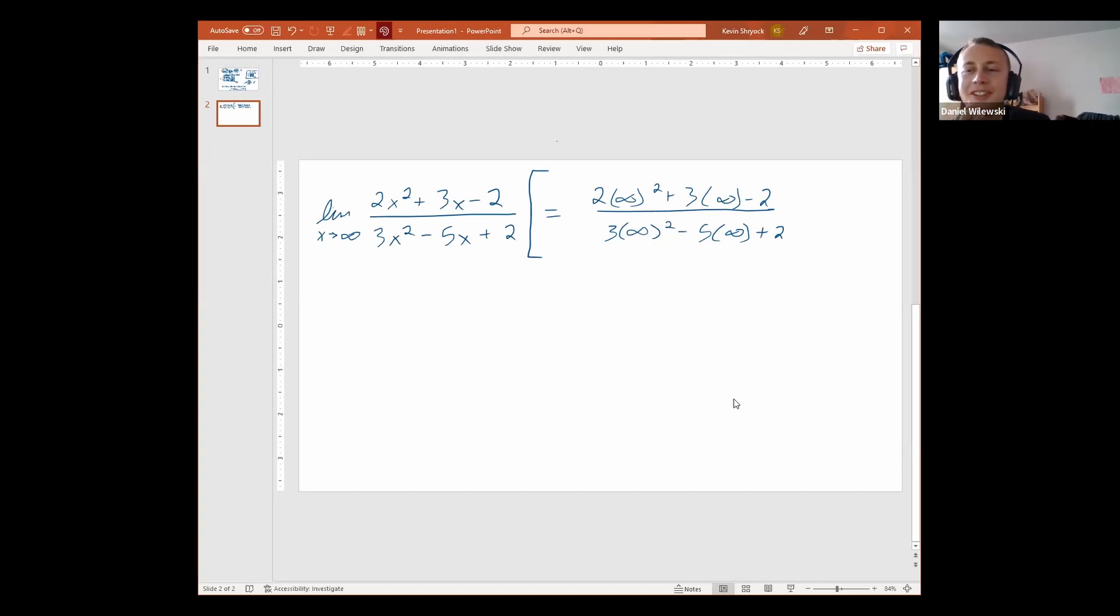But we can't put infinity into it. But I want that to be a rule. Okay, you want to see why it doesn't work? Let's just play. All right, infinity squared is what? It's still infinity. Times two, still infinity. Plus three infinities, it's still infinity. Plus minus two is infinity. Infinity. So this is going to simplify to infinity. What about on the bottom? It's going to simplify to infinity. What? Okay, what's infinity divided by infinity?